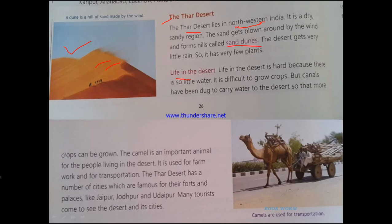So what kind of life do the people live in the desert? Life in the desert is hard because there is so little water. Like in the mountains where very few people live because the surface is rough, similarly in the desert region the main problem is the lack of water.